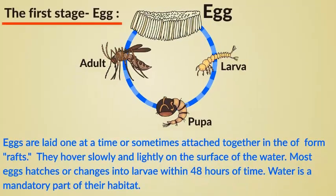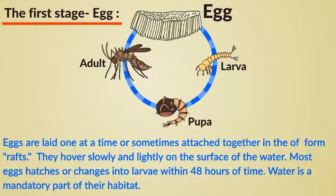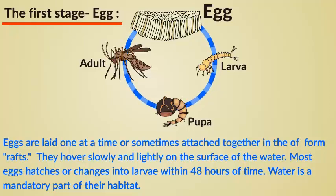The first stage: egg. Eggs are laid one at a time or sometimes attached together in the form of rafts. They hover slowly and lightly on the surface of the water. Most eggs hatch or change into larvae within 48 hours. Water is a mandatory part of their habitat.